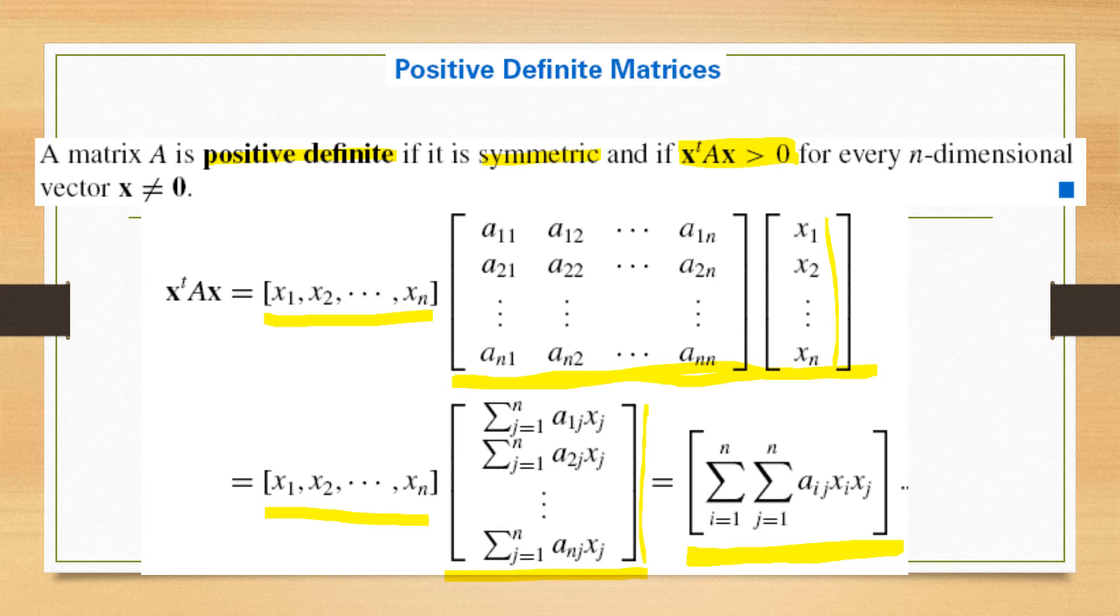And the definition shows that a matrix A is positive definite if it is symmetric and X transpose AX is greater than 0. If this is greater than 0 then matrix A is positive definite.